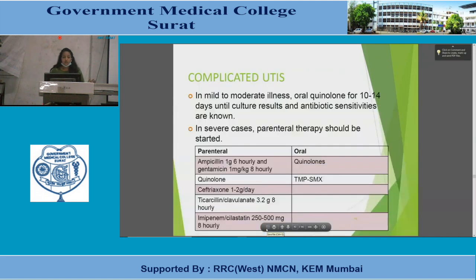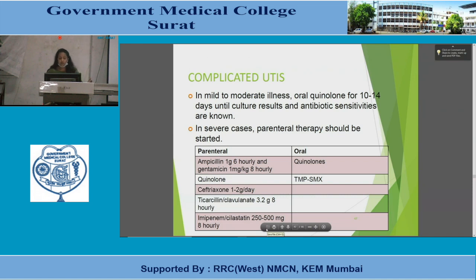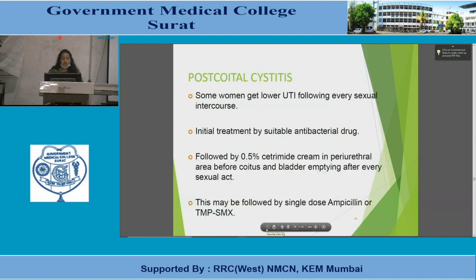For complicated UTIs: in mild to moderate illness, oral quinolones for 10–14 days until culture and sensitivity results are known. In severe cases, parenteral therapy with ampicillin-gentamicin, quinolones, ceftriaxone, ticarcillin-clavulanate, or imipenem-cilastatin, followed by oral quinolones or trimethoprim-sulfamethoxazole.